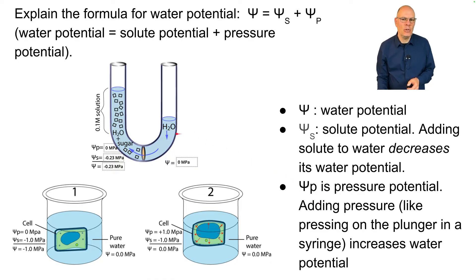Let's look at these two examples. We've added solute to this side of the U-tube. Pressure potential is zero. There's nothing pressing down on either side, but adding solute lowered the solute potential here to negative 0.23 megapascals. That's the unit used for pressure. So the total water potential here is minus 0.23 megapascals.